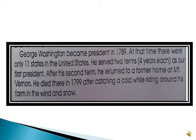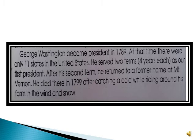He served two terms, meaning a total of eight years he served as the country's president. After his second term he came back to his former home — his previous home was at Mt. Vernon. There he died in 1799. The reason was that one day he was riding around his farm and the weather was extremely cold, with wind and snow, and he died because of catching cold.